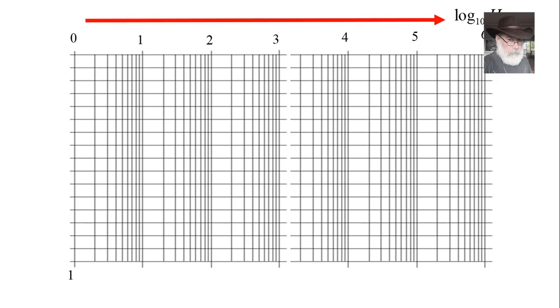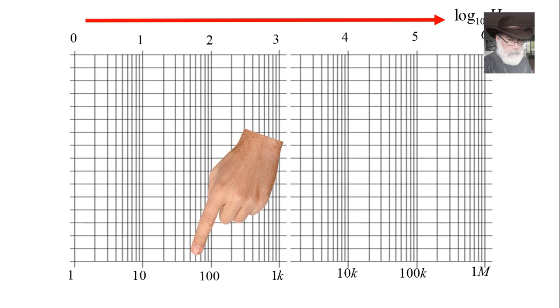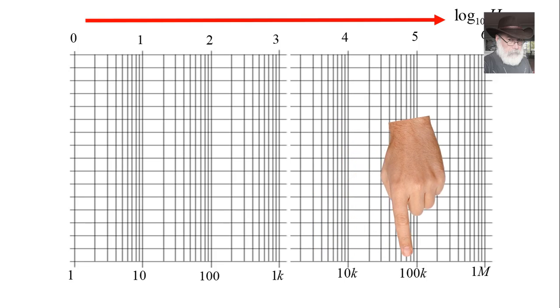Instead of writing the logarithm of H is 1 on the top, we say the logarithm of H is 1, H is 10. So we write H, knowing that what we mean is logarithm of - logarithm of 10, logarithm of 100, logarithm of 1k. That makes sense.